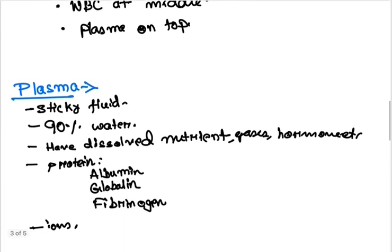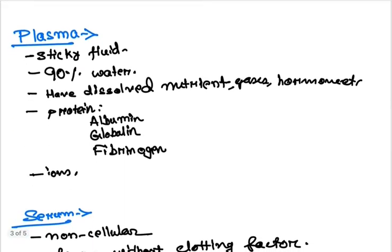Plasma is mostly water, 90 percent. It's a sticky fluid with straw color and contains hundreds of dissolved nutrients, gaseous hormones, waste, ions, and proteins. Five to seven percent are proteins: albumin, globulin, and fibrinogen.